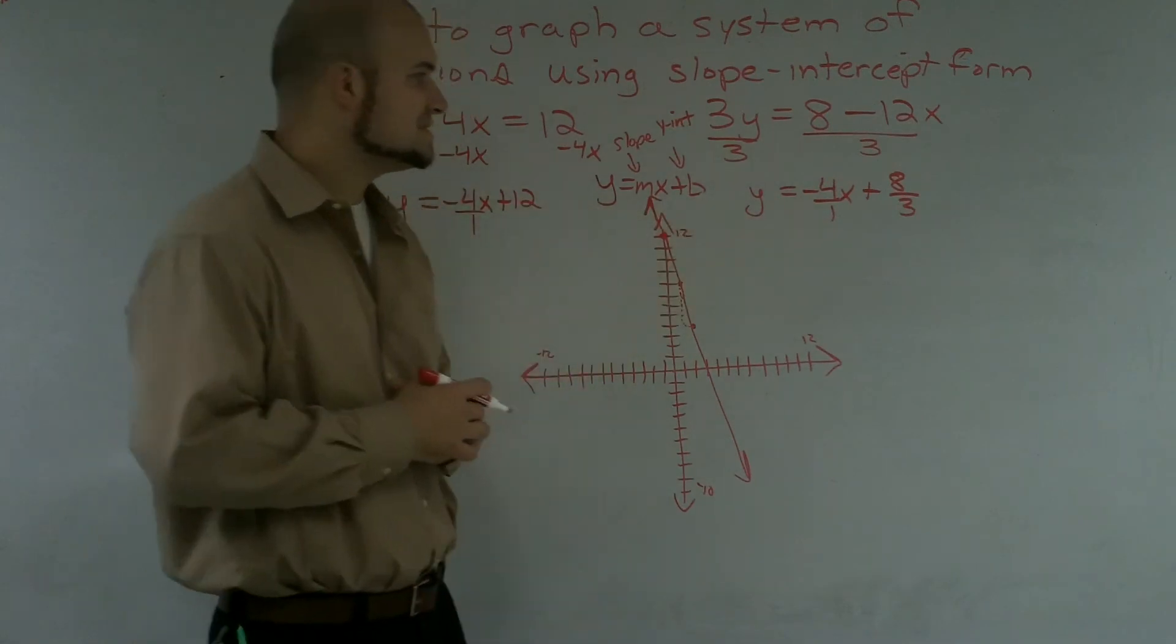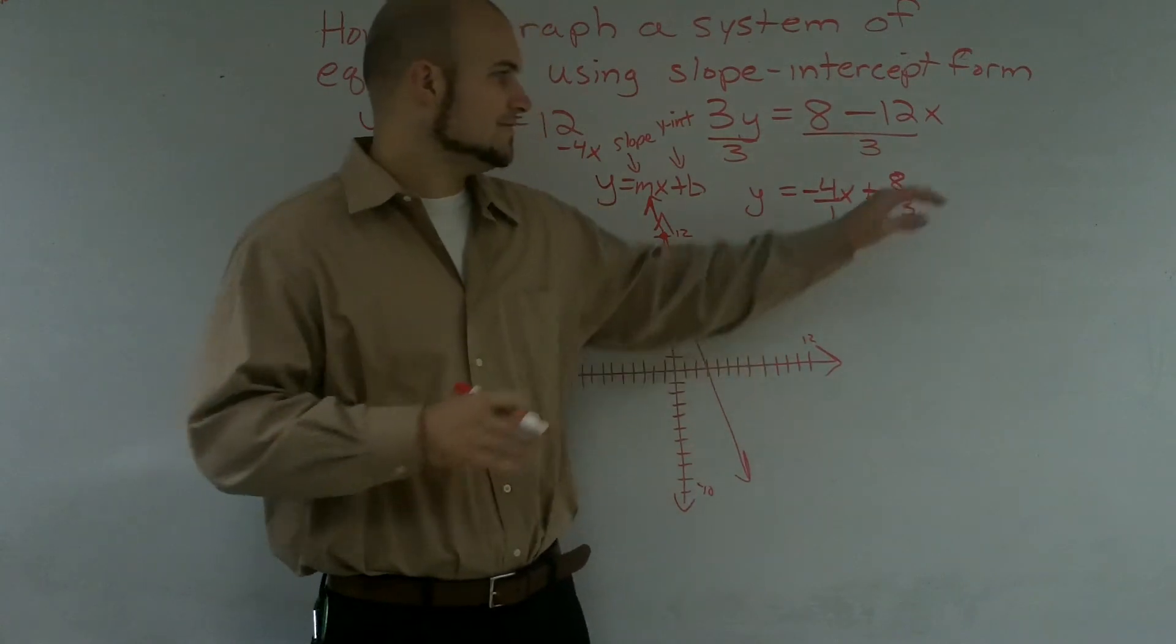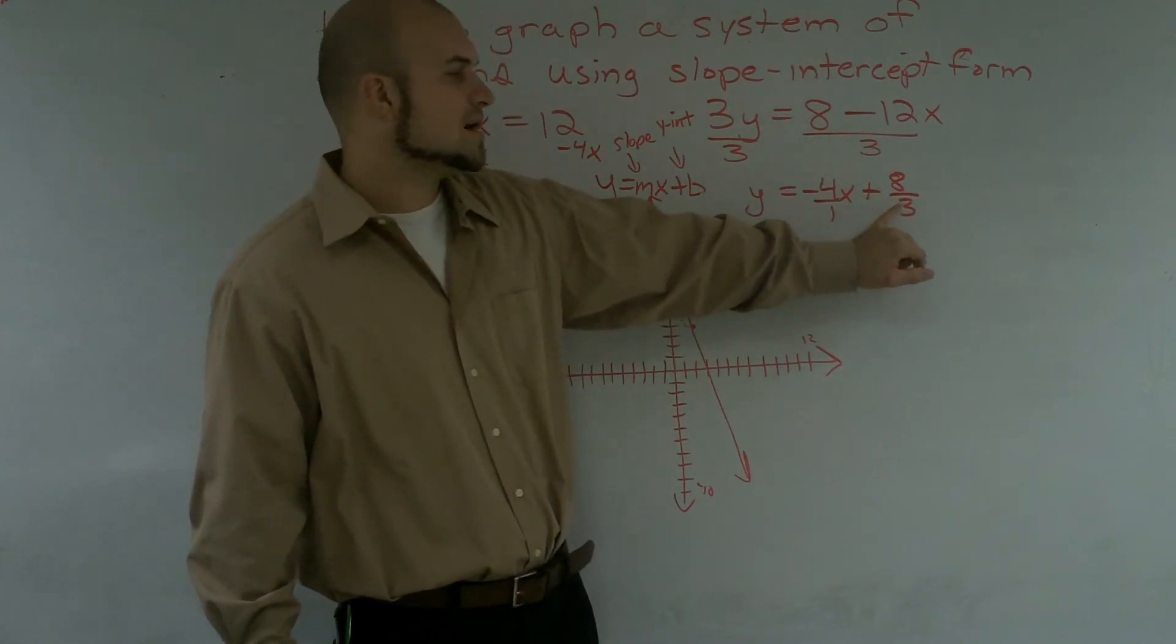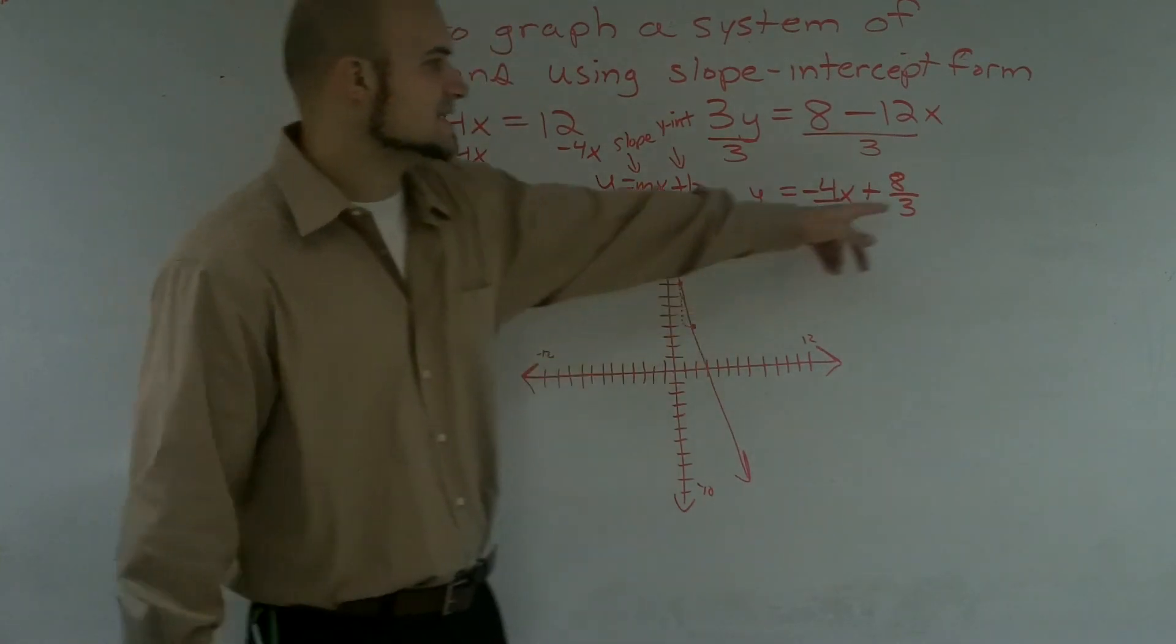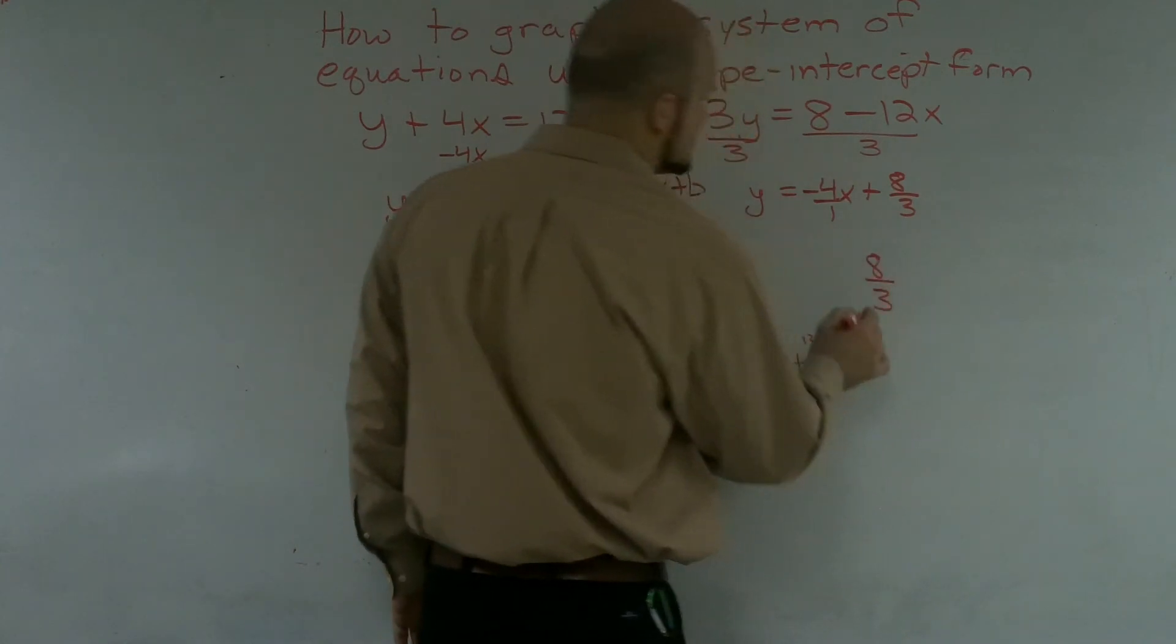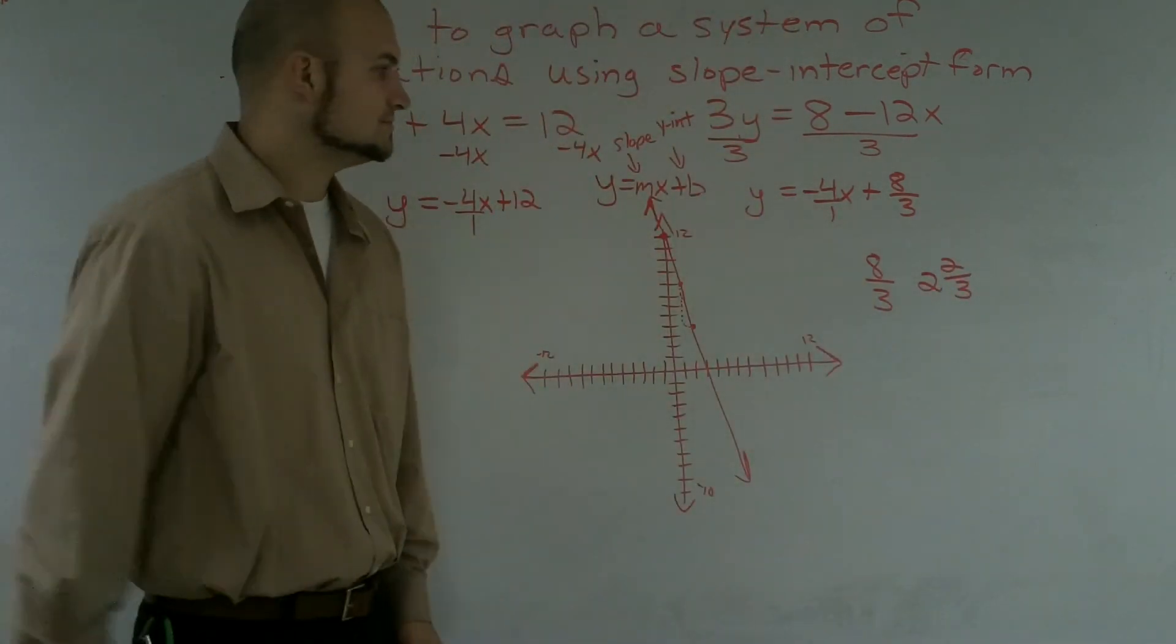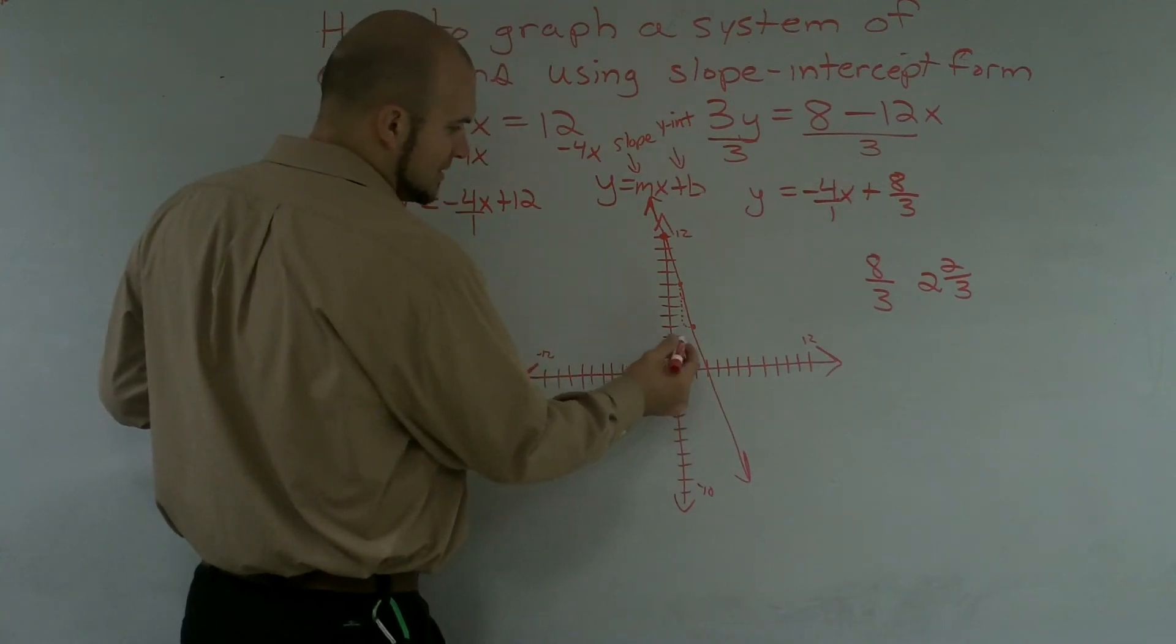And then now I need to go ahead and graph this equation. So one big problem that a lot of students have is they say, well, how do you graph 8 thirds? I don't understand how to graph that. That's an improper fraction. The easiest way that I say to take our improper fractions is to convert them back to mixed numbers. So I look at this 8 thirds and I say, all right, well, let's convert this back to a mixed number. So 8 thirds, we go 3 goes into 8 two times with a remainder of 2. So I'm going to go up 2, and then I'm going to go 2 thirds up.